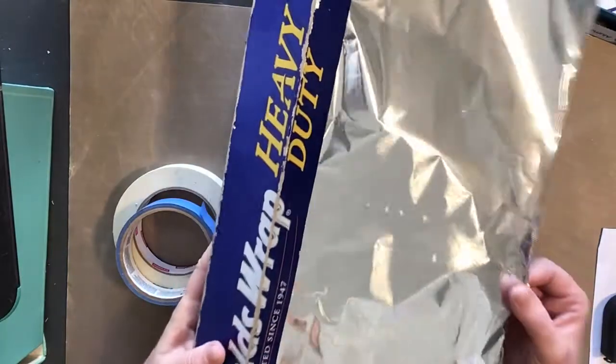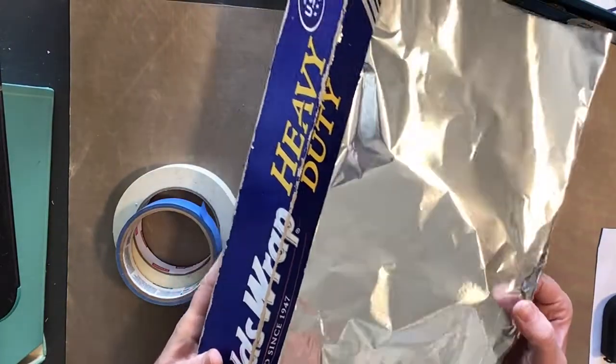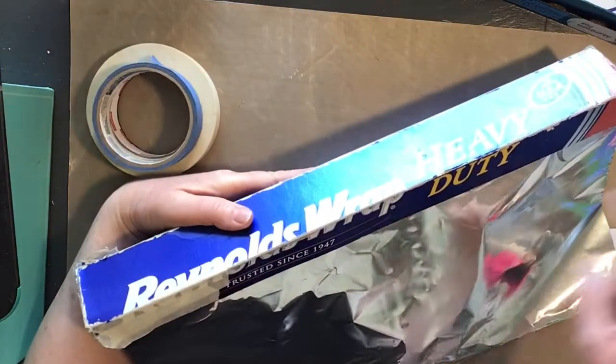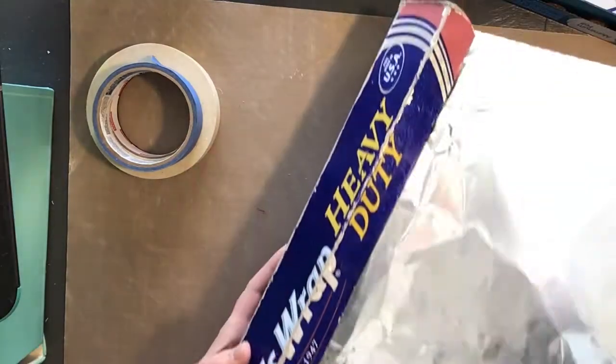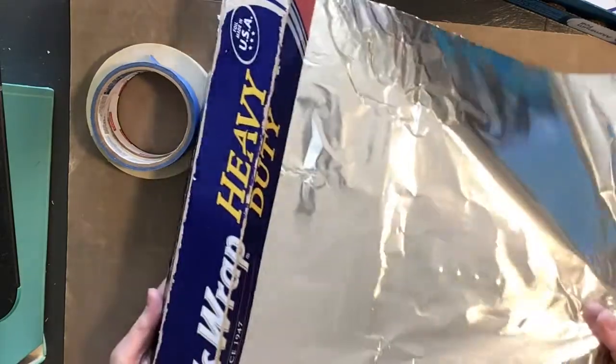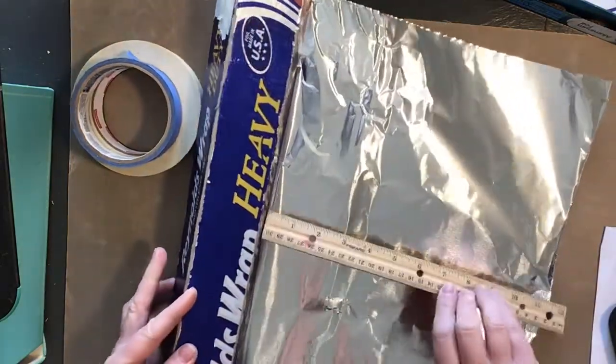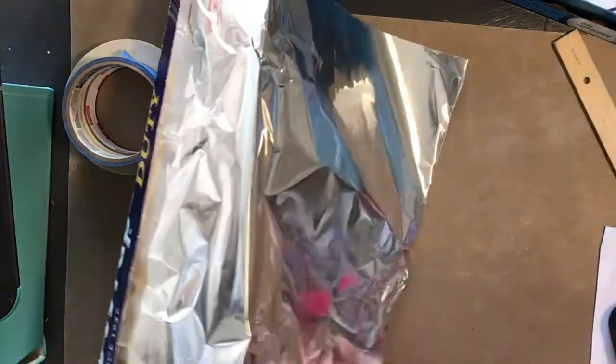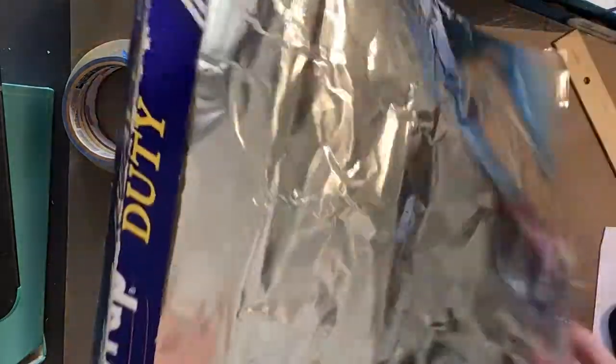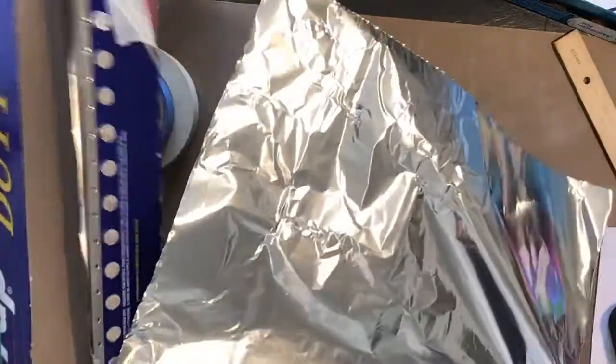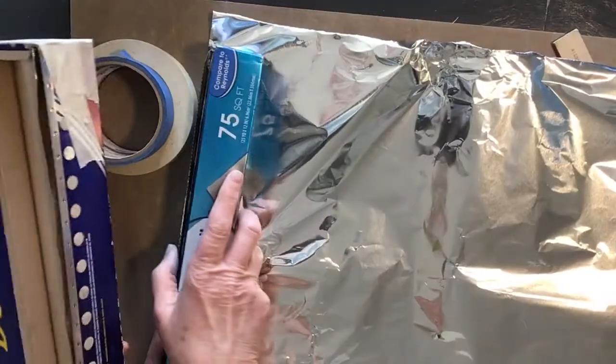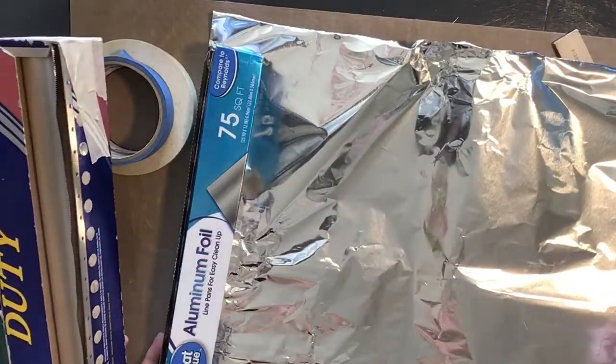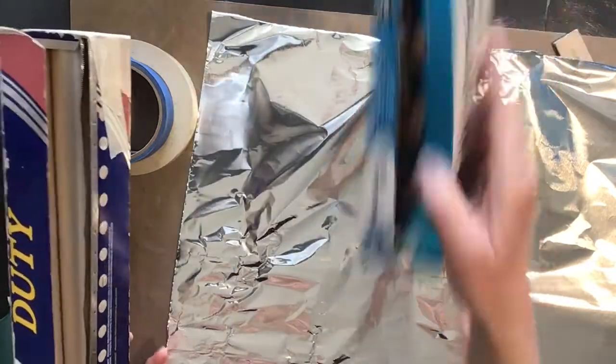You're going to take the aluminum foil and this is an extra wide container of foil. I'm going to pull out about 12 to 13 inches, a little bit longer than a ruler, and tear that off. If you have a narrower one, I would do an 18-inch piece of aluminum foil.